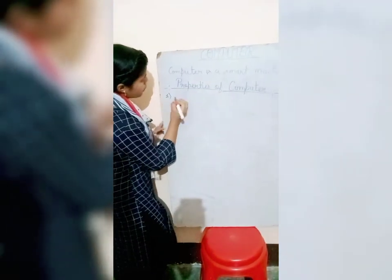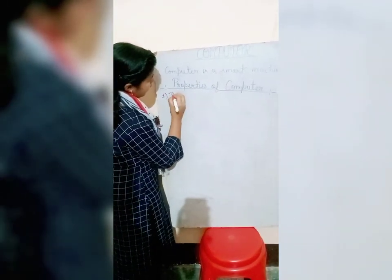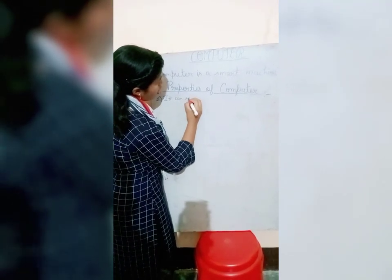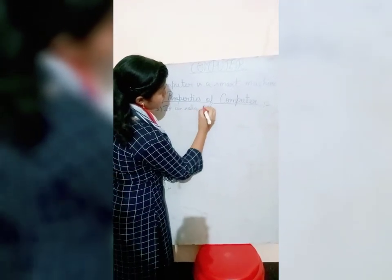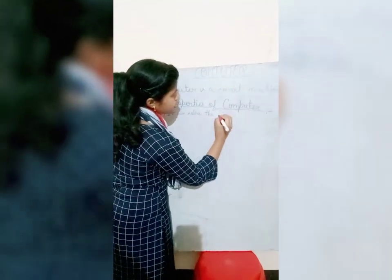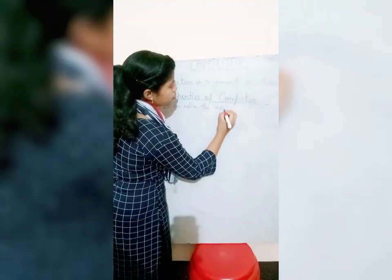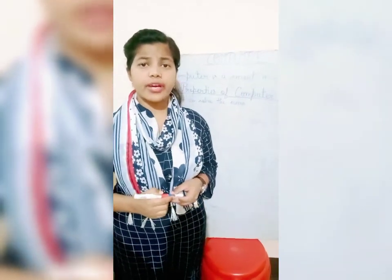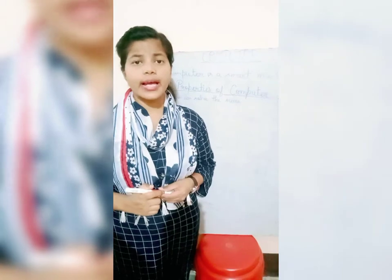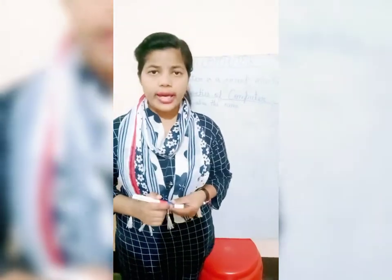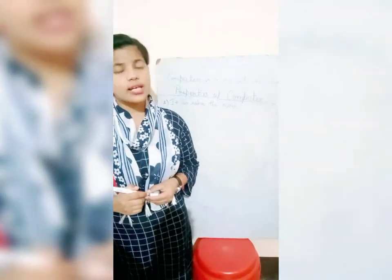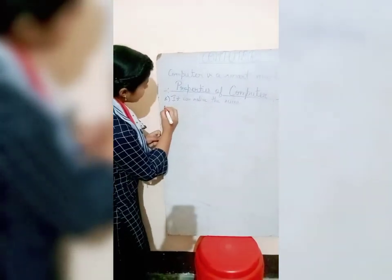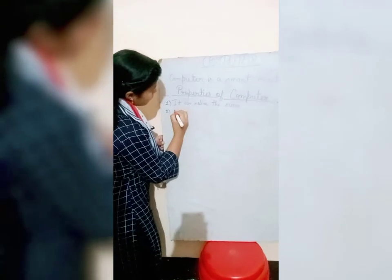So the first property is it can solve the sums. As you know, students, when we have any problem in maths, computer can solve it. So it is a smart machine. And the second property of computer is it can draw pictures.